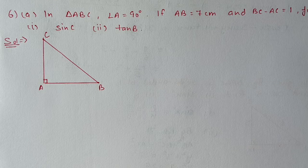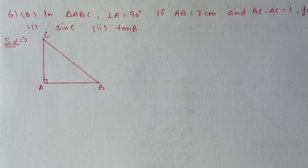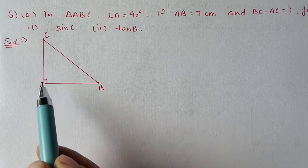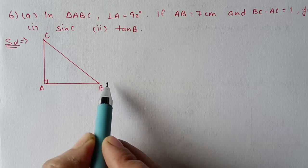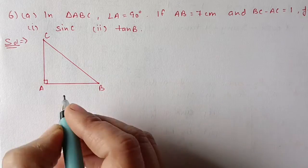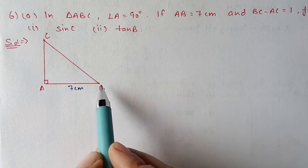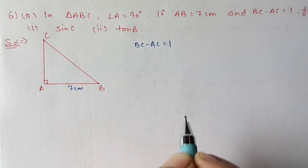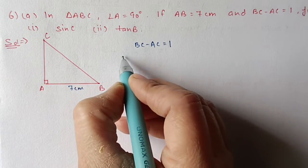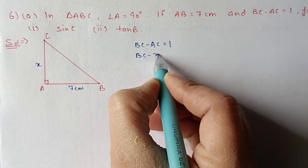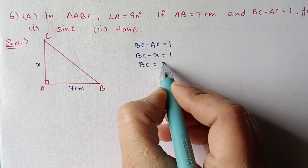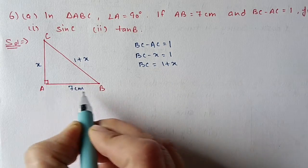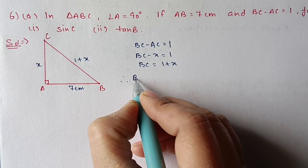Next, question number 6: In triangle ABC, angle A is equal to 90 degrees, AB is equal to 7 centimeters, and BC minus AC is equal to 1 centimeter. Find sine C and tan B. First, we draw a right angle triangle with A at 90 degrees. AB is 7. The difference between BC and AC is 1. Let AC equal x, then BC minus x equals 1, so BC equals 1 plus x.